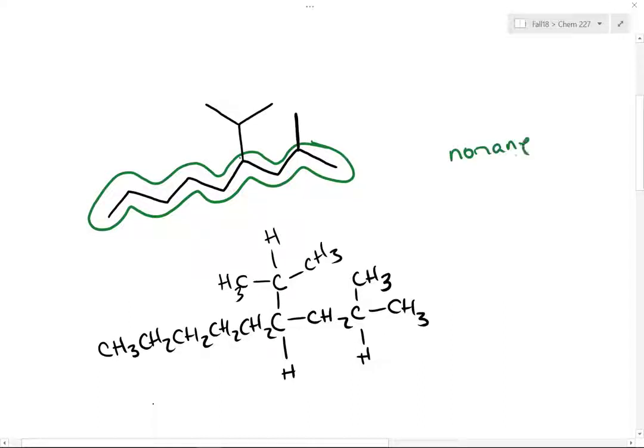The first substituent is encountered at carbon 2 — carbon 1, 2 — and it's going to be a 2-methyl.